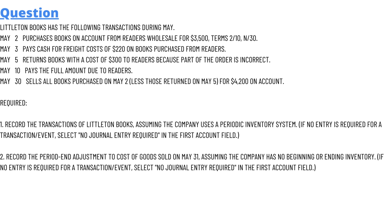And option 2 is, record the period-end adjustment to cost of goods sold on May 31, assuming the company has no beginning or ending inventory.